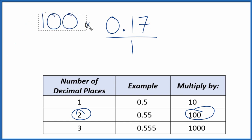So let's multiply the numerator by 100, and 100 times 0.17, that equals 17. So we have a whole number.